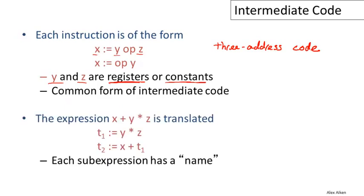To see that this code is actually low level, notice that higher-level expressions involving multiple operations will have to be translated into a sequence of instructions that do only one operation at a time. For example, if we have the expression X plus (Y times Z) — where times binds more tightly than plus — this can't be written directly in an intermediate language of this form. Instead, we would have to write it as: first compute Y times Z.